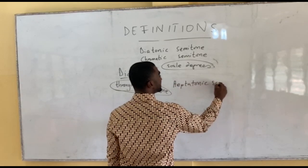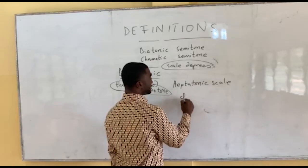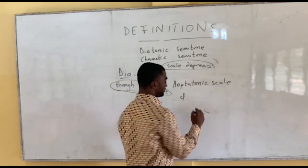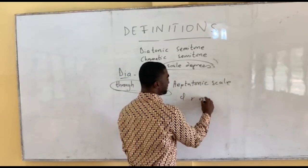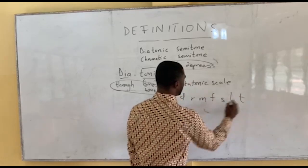The tonic scale is the seven-note scale in common practice music, which in tonic solfège is: do, re, mi, fa, so, la, ti.